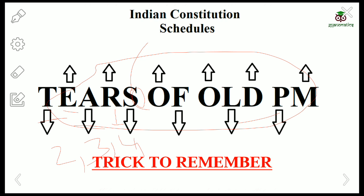The sixth schedule talks about Other Scheduled Areas. O correlates with Other Scheduled Areas. In other scheduled areas, there are four important states you should remember: Assam, Meghalaya, Mizoram, and Tripura. These are the states covered under the sixth schedule and you should remember them.